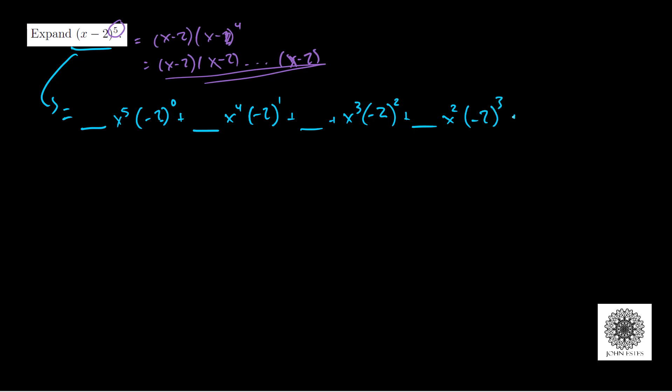Plus x to the first power times (-2) to the fourth, and then lastly x to the zero, and I'm almost out of room, but (-2) to the fifth power.